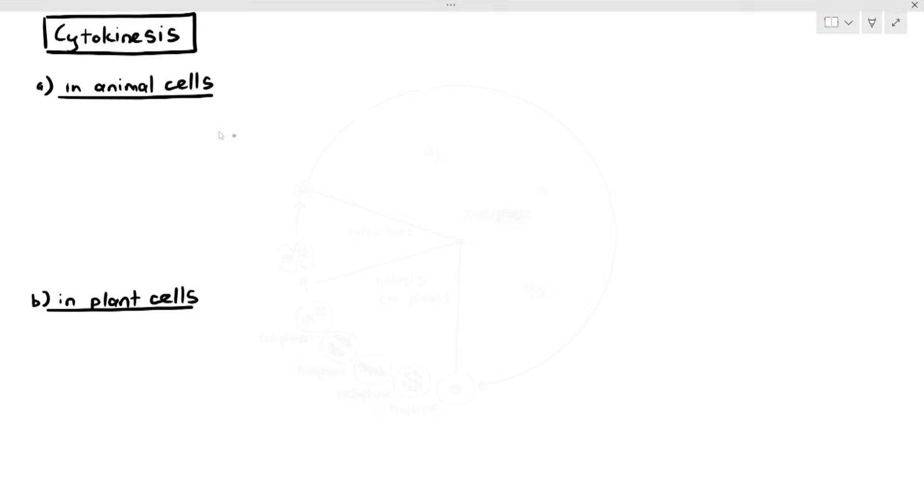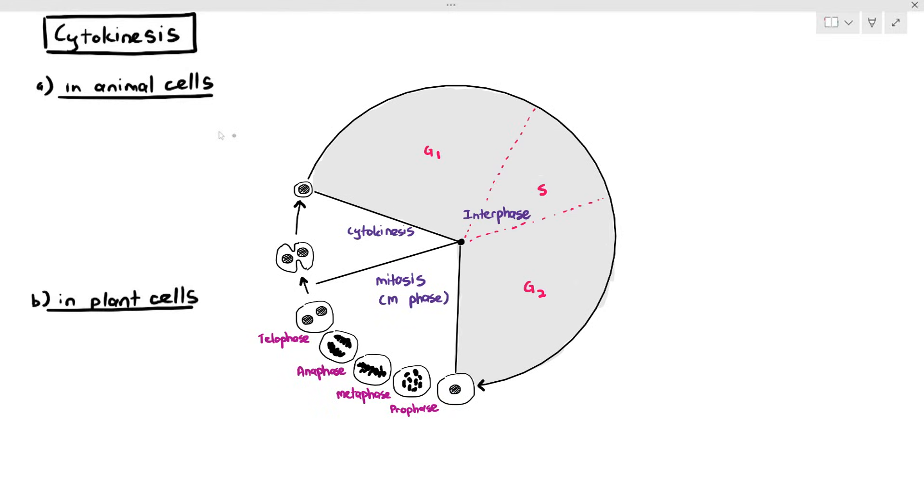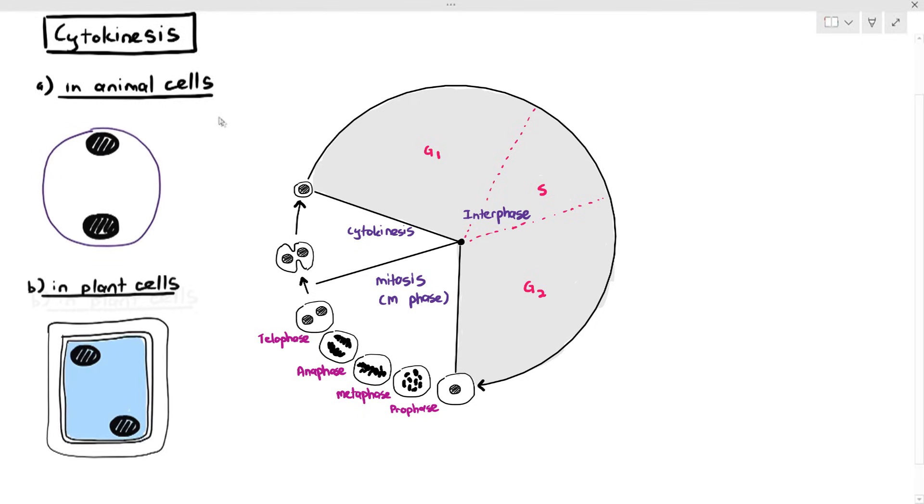Once the cell has done mitosis, which has the four stages - prophase, metaphase, anaphase, and telophase - the cell will now have two nuclei. It is still one cell, but the one cell has two identical nuclei at opposite poles. For example, this animal cell and this plant cell right here.